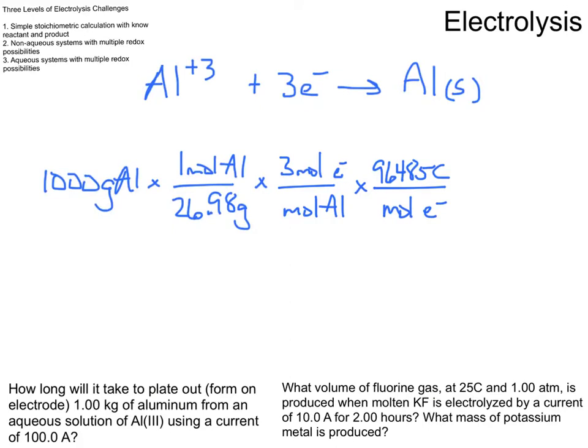So if we start to do some of the factor labeling so far, we see that the grams of aluminum cancel, the moles of aluminum cancel, the moles of electrons cancel. And right now I have coulombs. And what I need to get to is time. How long will it take?